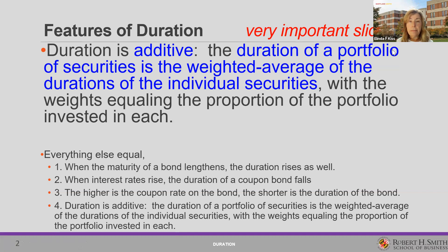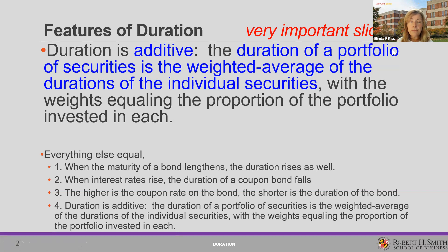Just a couple of other things to remind you about duration. When we have a longer bond maturity, we have a higher duration. When interest rates go up, the duration of a bond falls. The higher the coupon rate on the bond, the shorter is the duration.